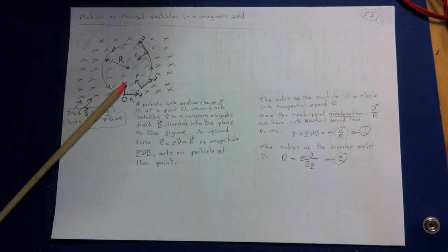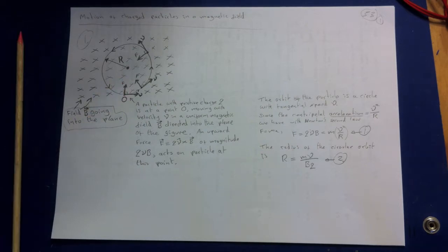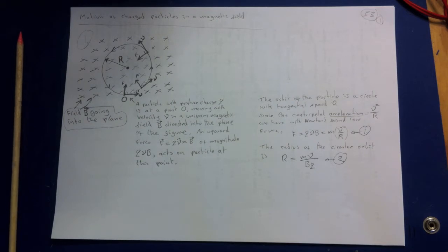An upward force F equals QV cross B of magnitude QVB. The force is always perpendicular to V, so it cannot change the magnitude of the velocity but only its direction. Thus the magnitude of both F and V are constant. At points such as P and Q the directions of force and velocity have changed as shown.